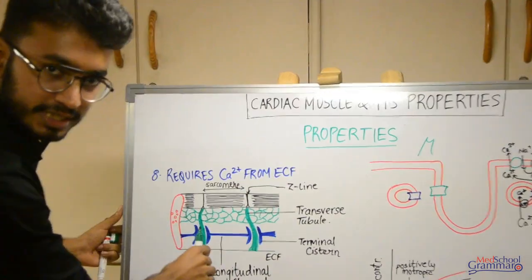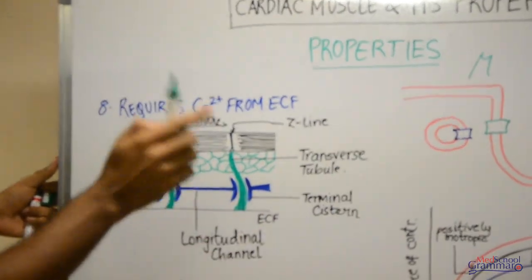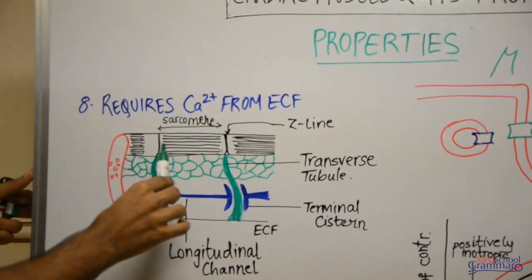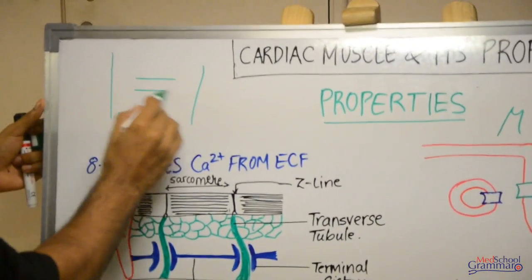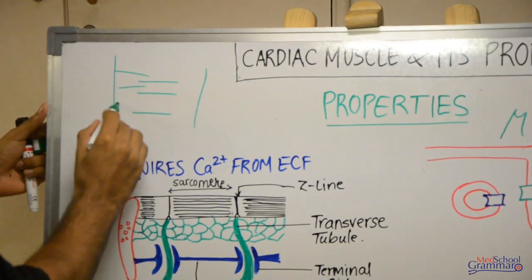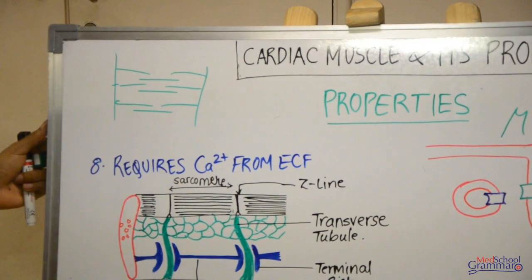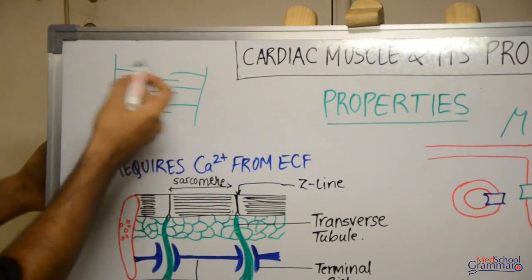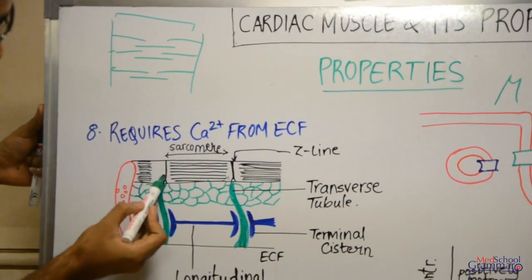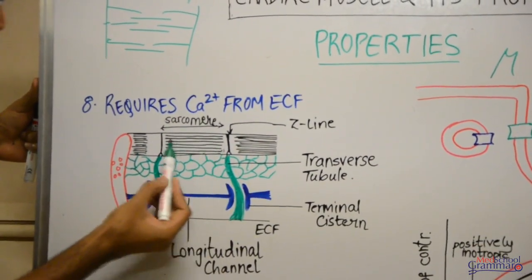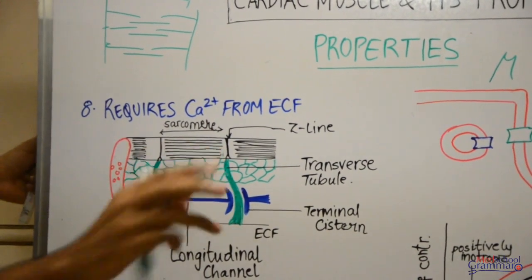This is the longitudinal section of the cardiac muscle — a microscopic structure. We know the structure of skeletal muscles: this is a Z line, these are the thick filaments, and these are the thin filaments. Actin is on the thin filaments and myosin on the thick filaments. The area between two Z lines is known as the sarcomere. These are the Z lines and these are the thick and thin filaments.